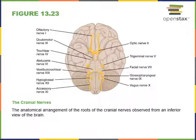Cranial nerve seven is the facial nerve, attaching to the pons and extending to the face. Its afferent fibers carry the sense of taste from the tongue. The efferent fibers excite the muscles of facial expression, including the depressor labiae inferioris, depressor anguli oris, orbicularis oris, orbicularis oculi, and the zygomaticus major and minor.